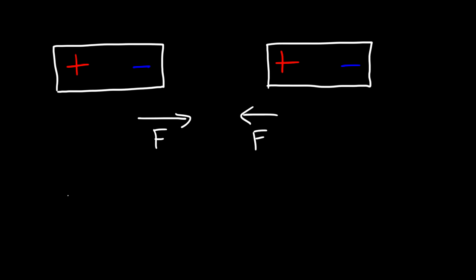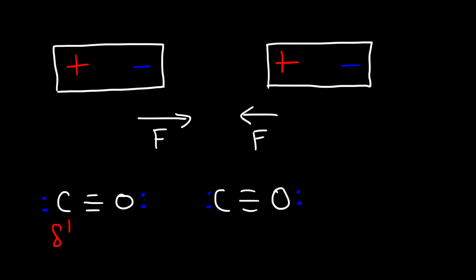In the case of carbon monoxide, we need to line up two carbon monoxide molecules together. As we said before, the carbon atom is partially positive and the oxygen atom is partially negative. So the dipole-dipole interaction that exists between two carbon monoxide molecules is the attraction between the oxygen of one molecule and the carbon of another.